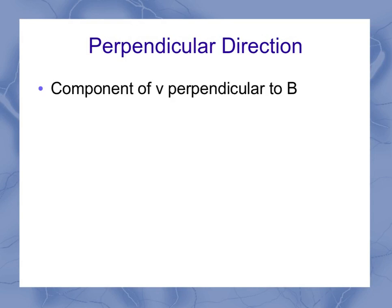So when it comes to the perpendicular direction, I can think about this as there's got to be a component of my velocity which is perpendicular to my magnetic field. So if I've got a magnetic field and I've got a velocity off at some angle, well, that velocity has two components.